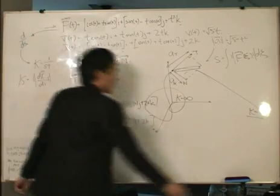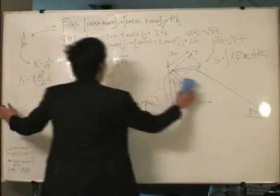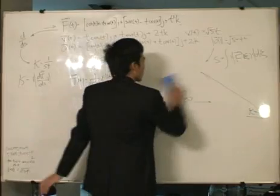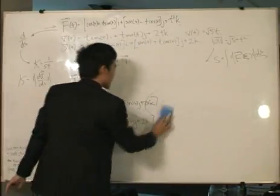Simple enough, cancelling out the t. Now, let's find the normal vector, the unit normal vector, which is a bit interesting to find.